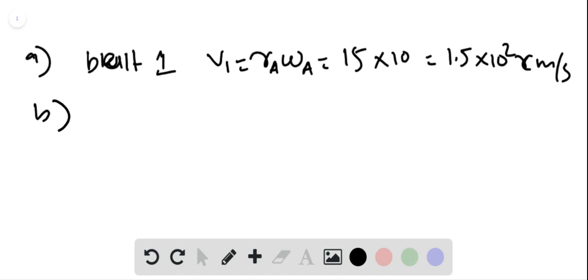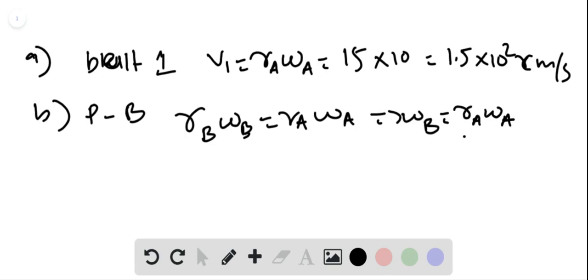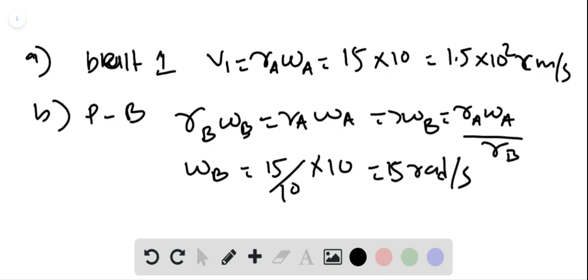Part B, the angular speed of pulley B is given by RB omega B equals Ra omega A. From here, omega B will equal Ra omega A divided by RB. Substituting values, we get omega B to be 15 divided by 10 times 10, which gives us 15 radian per second.